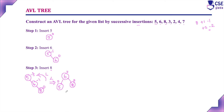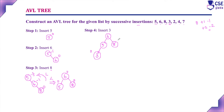Step 4: insert element 3. The tree is currently 6, 5, and 8. Element 3 is less than root 6, so go to its left subtree. Element 3 is less than node 5, so insert 3 as a left child of 5. Check balance factor: for leaf node 3 it is 0, for node 5 it is 1 minus 0 = +1, and for root node 6 it is 2 minus 1 = +1. The tree is balanced — no rotation needed.